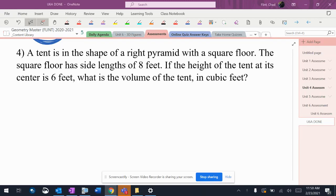A tent is in the shape of a right pyramid with a square floor. The square floor has side lengths of 8 feet. If the height of the tent at its center is 6 feet, what is the volume of the tent in cubic feet? Tons of words, but it's just a pyramid with a square base, written to be confusing.